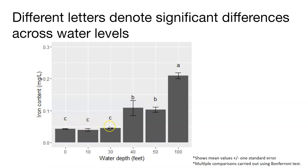We can say there are no differences for water depths at 0, 10, and 30 feet. The water depth at 40 and 50 feet is significantly different from 0, 10, and 30 feet and from 100 feet. The water depth at 100 feet, because it has a different letter, is significantly different from both 40 and 50 feet and 0, 10, and 30 feet. This is a really common way of showing differences after doing multiple comparison procedures: we did an ANOVA, found differences across water levels, and after the Bonferroni test we can confirm which specific groups differ. This is common presentation within the analysis of variance framework.